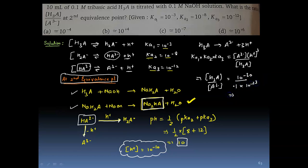So if I solve, I get the value as 10⁻⁷. So this ratio of H3A... this 0.1 will not be here because it has already gone over here. So the ratio of H3A to A³⁻ at second equivalence point will be 10⁻⁷.